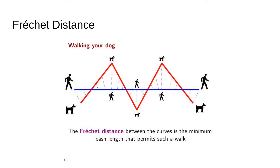The Fréchet distance is a distance metric that is best fit for curves and polygons, and it is perfect for pattern matching and shape matching. It doesn't require the two curves to be identical — it allows them to be within a given approximation range. As an example, if you walk your dog on a leash, it can go on its own path as long as the leash allows. The shortest leash that allows you and your dog to walk the same curve without diverging is the minimum Fréchet distance — that is the intuition behind it.